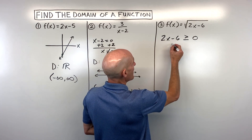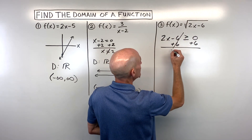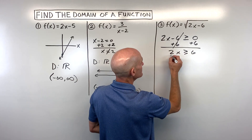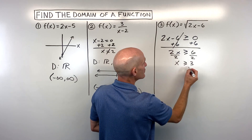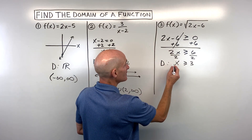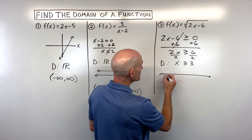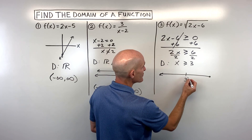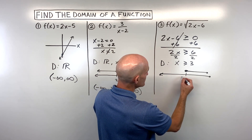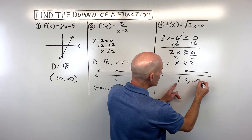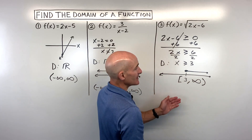So let's solve this inequality for x — we're going to add six to both sides. 2x is greater than or equal to six; divide both sides by two. And x has to be greater than or equal to three. That's our domain in inequality notation. Now in interval notation, let's go to the number line. If this is three, it can be equal to three or greater. So we use a square bracket at three, to positive infinity with a parenthesis — and that's how you write it in interval notation.